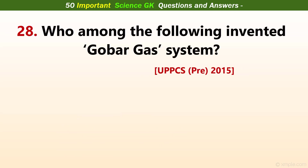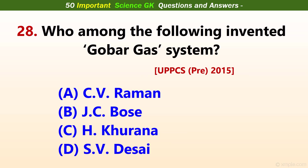Who among the following invented the gobar gas system? Answer D: S. B. Desai.